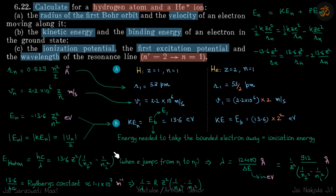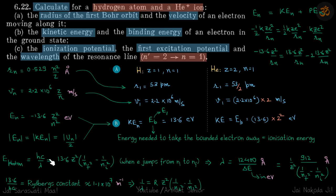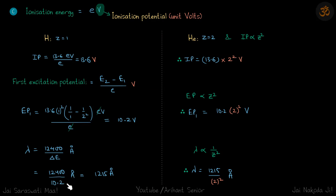Finally, for the wavelength of the resonance line, we use λ = 12400 / ΔE. We already calculated ΔE = 10.2 eV (which is 13.6 × 1² × (1 - 1/4) eV), giving λ = 1215 angstrom for hydrogen. Since λ is inversely proportional to z², for helium λ = 1215 / 2² = 1215/4 angstrom.